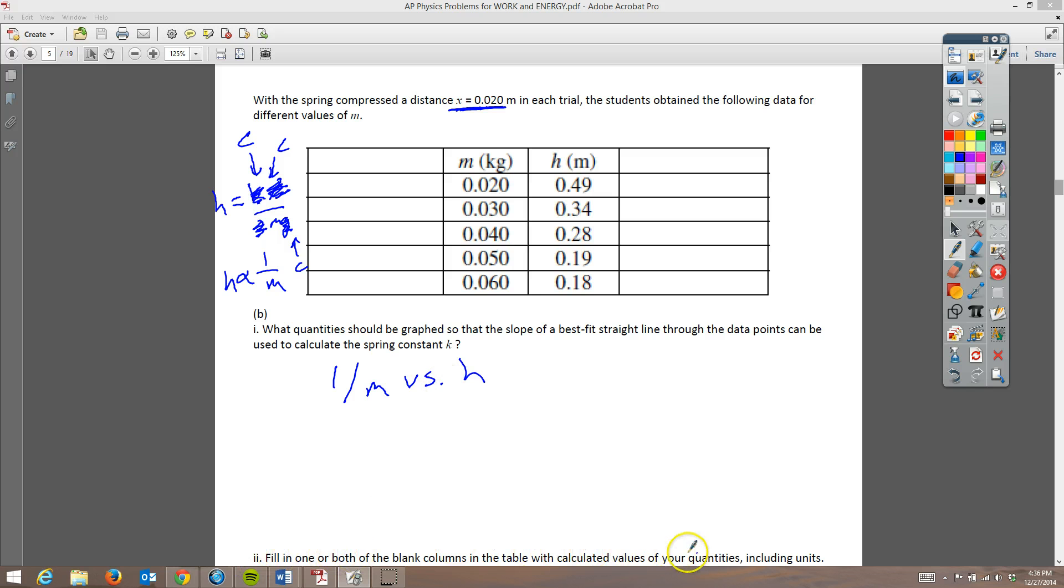So it's fill in one or both of the blank columns of the table with the quantities including units. So we're going to say this is 1 over mass, which would be 1 over a kilogram, or you could write a kilogram to the negative 1. So you could do either of those. And they mean essentially the same thing. So now we need to fill in these boxes. I'm going to cheat a little bit. I'm going to use the key that I've got. So it's 50. 1 over 0.03 is 33. 1 over 0.04 is 25. 1 over 0.05 is 20. And then finally 1 over 0.06 is going to be 17.